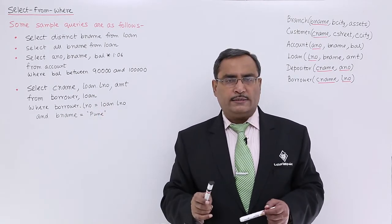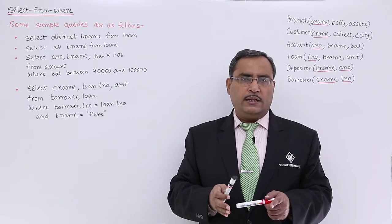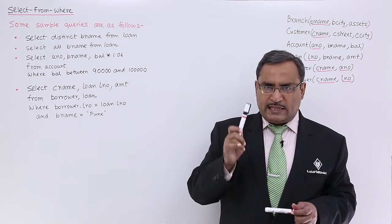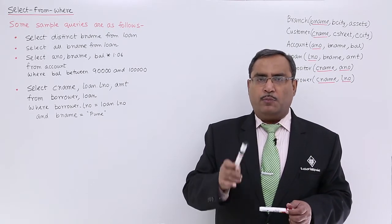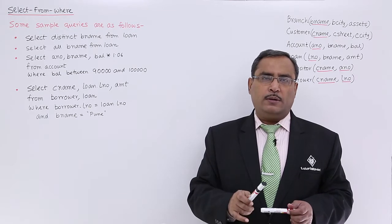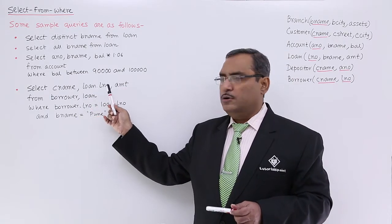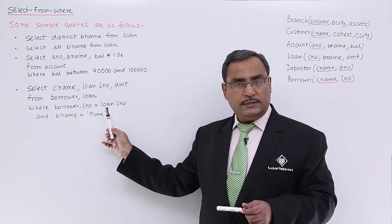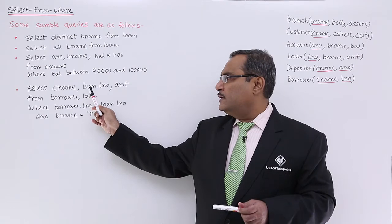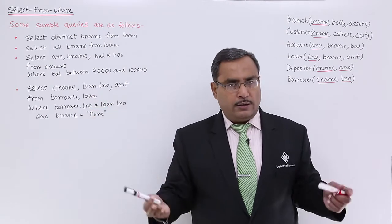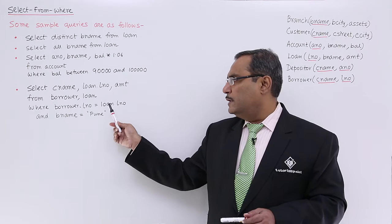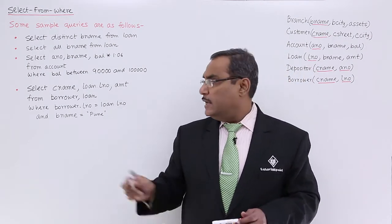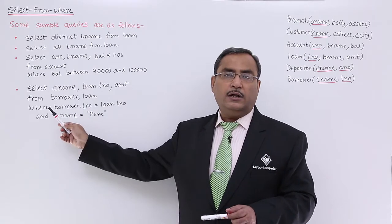But here, this LNO is coming from both relations - loan and borrower. I should be mentioning explicitly from which relation, from which table we are taking this loan number as output. That is why we have written borrower dot loan number. The thing is that as this particular condition is there under the where clause, if you write borrower dot loan number then also I will be getting the same output because borrower dot loan number equals loan dot loan number was one of the predicates, one of the conditions in our condition set under where clause.